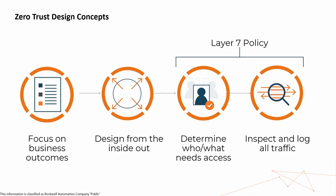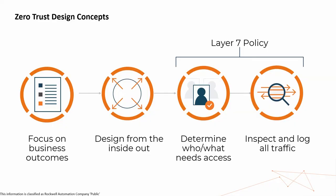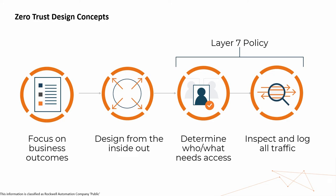The four design concepts: First, focus on the business drivers - what is your business trying to achieve? Second, design the system from the inside out; start with the data or assets you're trying to protect. If you don't know what you're protecting, it will never work. Third, determine who or what should have access to any particular resource - need to know, least privilege, but enforce it. We've talked about least privilege forever, but we never enforced it. And finally, inspect and log all traffic, because that's where all the bad stuff happens.